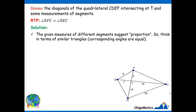Now let us look at the solution. Obviously, as our starting point, we are guided by the givens. The given measures of different segments suggest proportion. So think in terms of similar triangles — that is, corresponding angles are equal — meaning once we establish two triangles where those two angles are contained as similar, then you can conclude that corresponding angles are equal. Remember, all congruent triangles are similar.